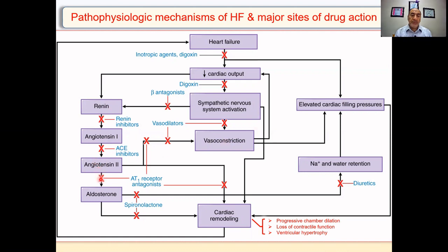Angiotensin-2 also facilitates aldosterone release. Aldosterone itself can cause sodium and water retention and also elevate cardiac filling pressure. Angiotensin-2 can cause remodeling. So three things angiotensin-2 can do: vasoconstriction, facilitating aldosterone release, and cardiac remodeling.